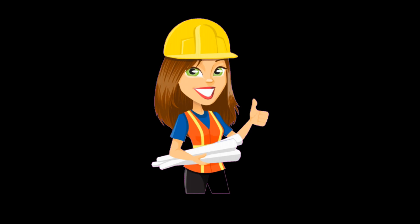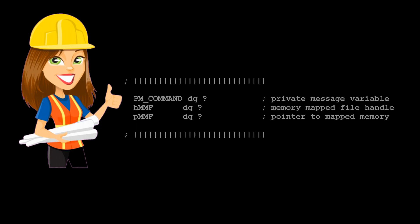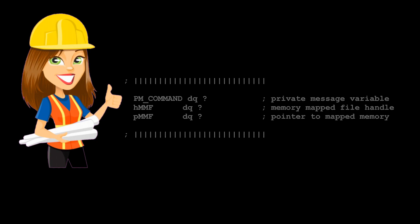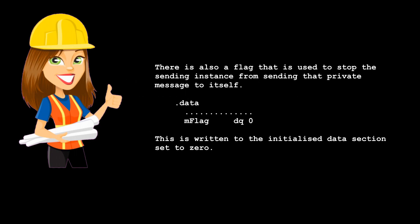The following code is from Billy's example, so you can refer it directly to the example code. First, we need to make three global variables in the uninitialized data section. The first is a 64-bit variable for a private message name, used as the return value for the RegisterWindowMessage Windows function. The following two are for the memory mapped file — one a handle, the other a pointer to the mapped memory. There is also a flag, written to the initialized data section set to zero, that is used to stop the sending instance from sending that private message to itself.